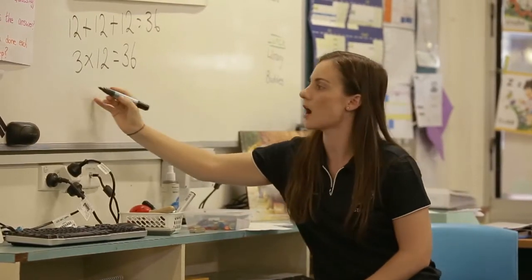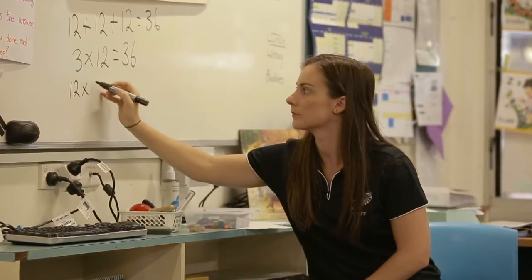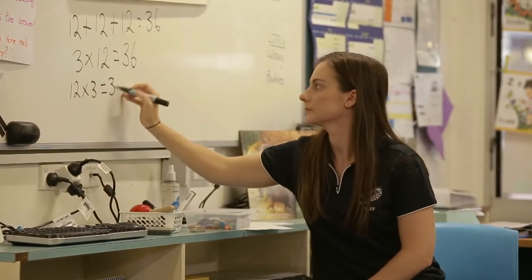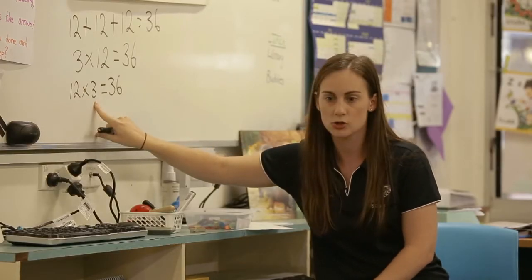How can I turn that into something different? Spin it around. I can spin it around. So that means I would have what, Faith? 12 times 3 equals 36. So I would have 12 groups and how many in each group, Jason? Three.